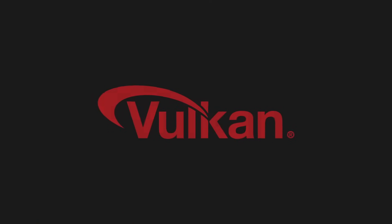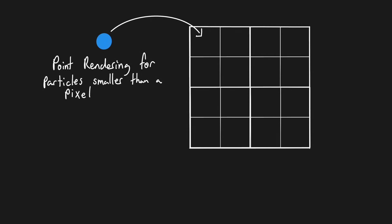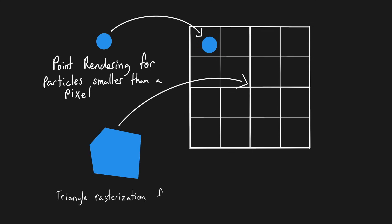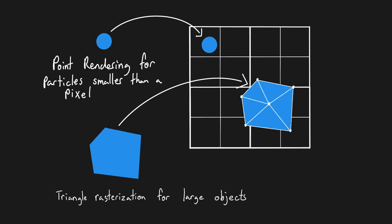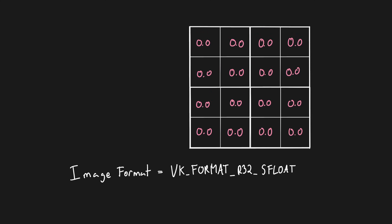All of this can be very efficiently implemented using the Vulkan API. A grid is represented by an image with each grid cell corresponding to a pixel. For the highest level of detail grid, LOD0, I simply render every particle in the scene. Particles smaller than a single pixel can be rendered as a point, while larger objects can get rendered using typical triangle rasterization. Usually you would store an RGB color value for each pixel — instead, each pixel holds a single floating point value that accumulates the mass of every particle fragment that falls within its bounds.